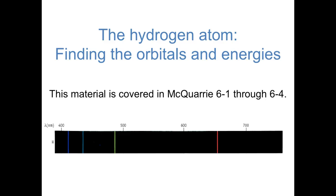Hi, everybody. In earlier videos, we've applied the Schrödinger equation to different types of motion of atoms: translational, vibrational, and rotational. In this video, we'll apply the Schrödinger equation to the structure of a hydrogen atom itself, to look at the orbitals and energies of an electron.